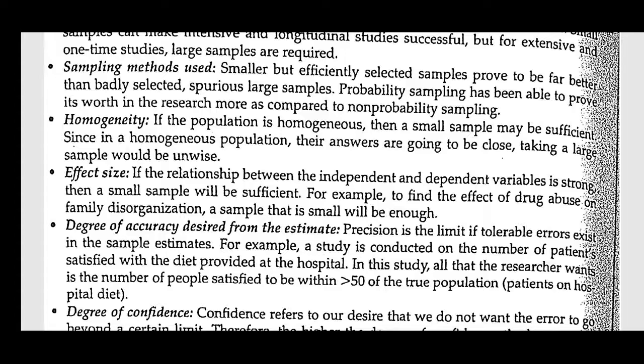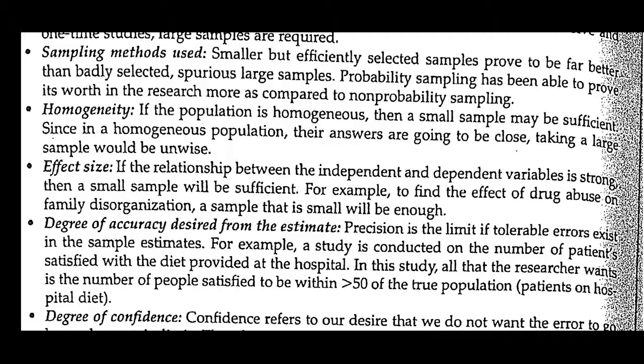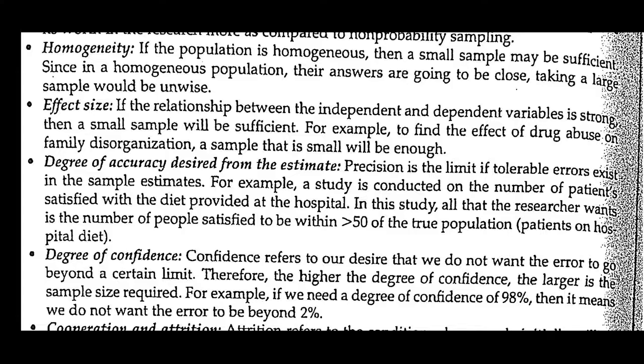Regarding sampling method used: smaller but efficiently selected samples prove to be far better than badly selected, spurious large samples. Probability sampling has been able to prove its worth in research more as compared to non-probability sampling. Probability sampling involves random selection of samples, whereas non-probability sampling does not, meaning not everyone gets an equal chance. Therefore, probability sampling is the more effective method.